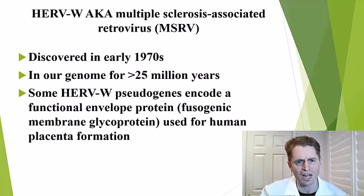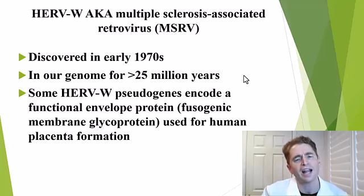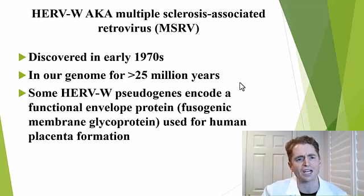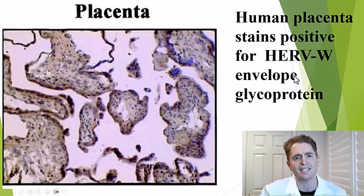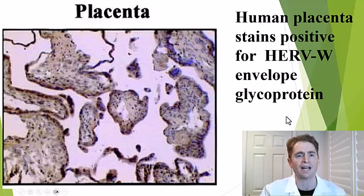We've known about HERV-W for a long time. It was discovered in the early 1970s and is estimated to have been in our genome for more than 25 million years. And it's not entirely purposeless — some HERV-W copies have been turned into pseudogenes that actually encode a functional envelope protein known as fusogenic membrane glycoprotein, which is part of the human placenta, the sac in pregnancy that helps support the fetus.